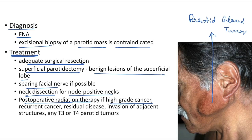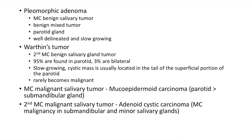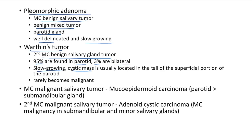Post-operative radiation therapy is indicated for high-grade cancer, recurrent cancer, residual disease, invasion of adjacent structures, or T3/T4 parotid tumors. Pleomorphic adenoma is the most common benign salivary tumor, usually affecting the parotid gland — well-delineated and slow-growing. Warthin's tumor is the second most common benign salivary gland tumor; 95% occur in the parotid, 3% are bilateral — slow-growing cystic mass in the tail of the superficial parotid, rarely becomes malignant.